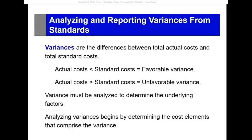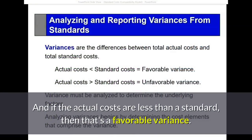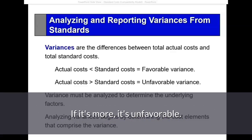Variances: we're going to collect actual data and compare it to the standard. If the actual costs are less than the standard, that's a favorable variance; if it's more, it's unfavorable. Then we're able to analyze variances to determine the underlying factor.